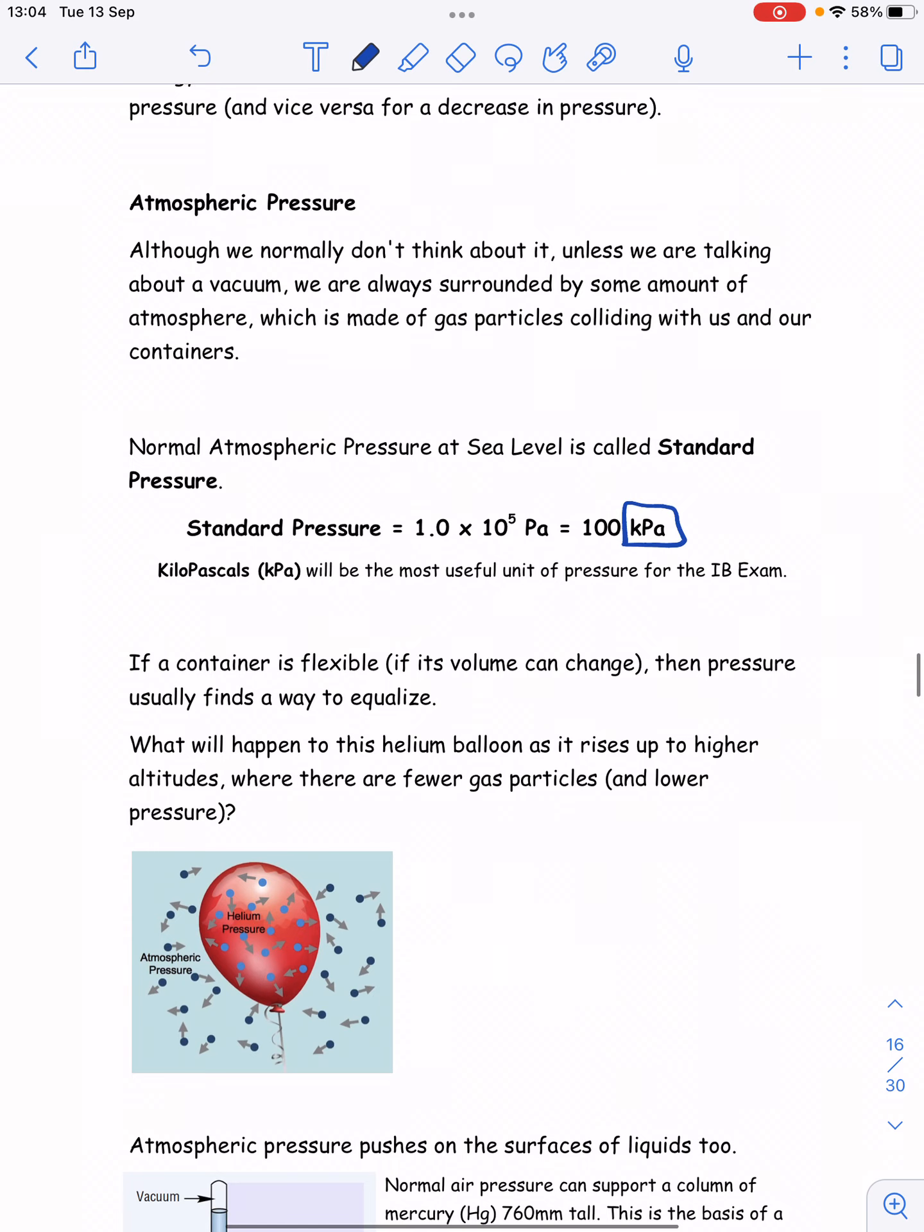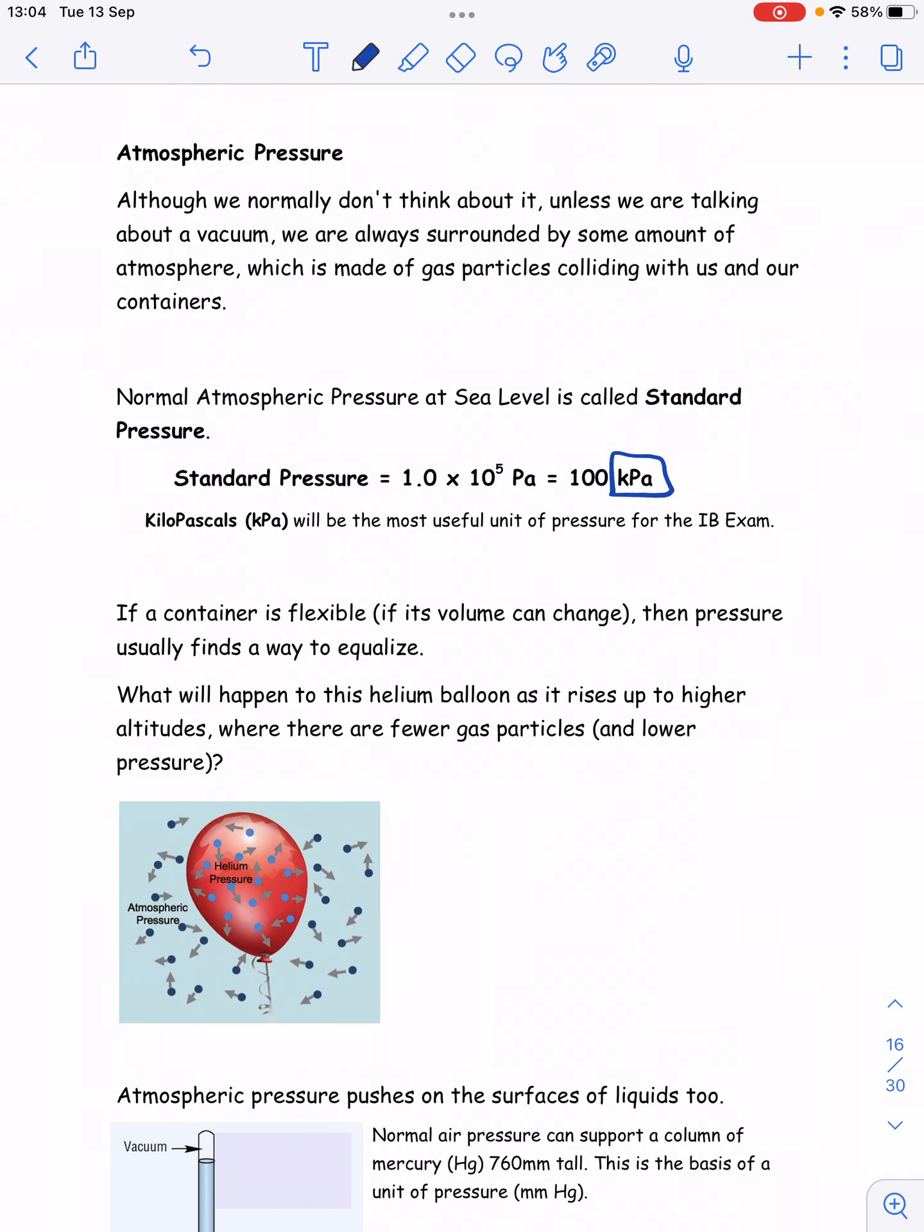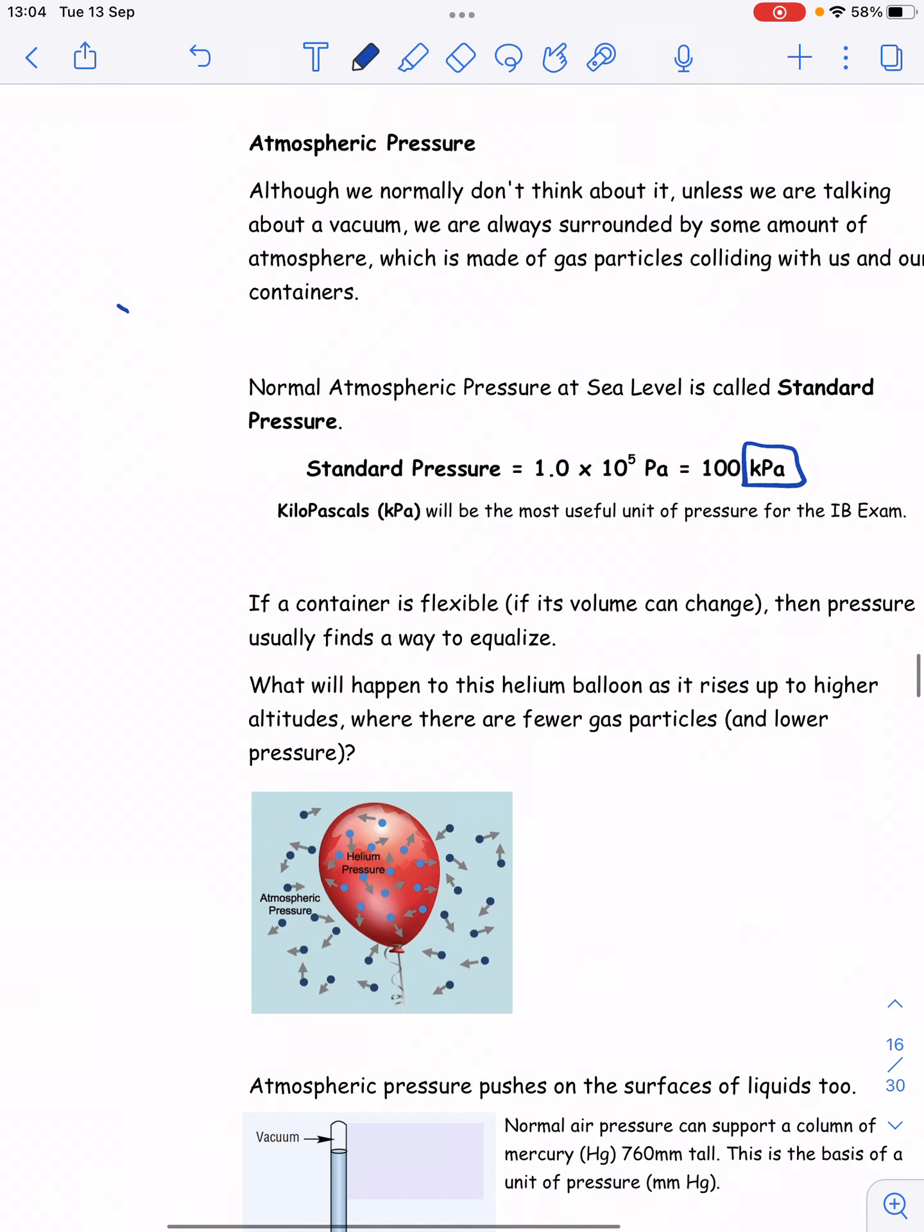It's also important to remember that there is atmospheric pressure. So we might be talking about a particular sample of gas, and maybe our gas is inside this balloon. But there's also lots and lots of gas particles outside of it. So very rarely are we talking about being in a vacuum, like being in outer space, where there's really no particles. So this is the air around it, or the atmosphere. And that has a pressure. And then we've got the gas on the inside, which also has a pressure.